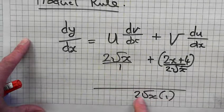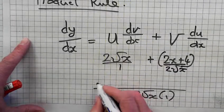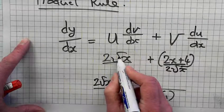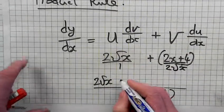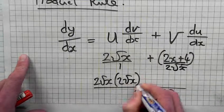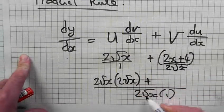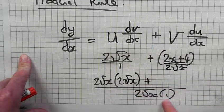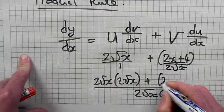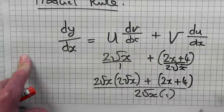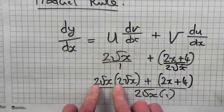So 1 into this is 2 root of x, times the thing on the top, times 2 root of x. Plus 2 root of x into this goes in once. So 1 times 2x plus 4. Right, multiply these. What's 2 times 2?